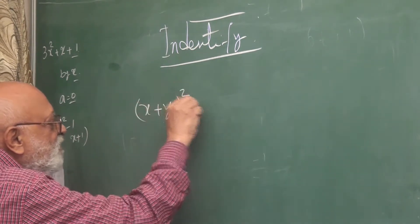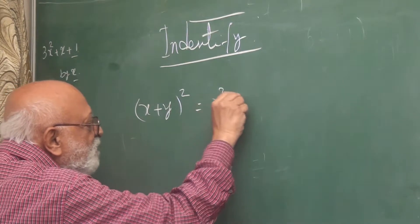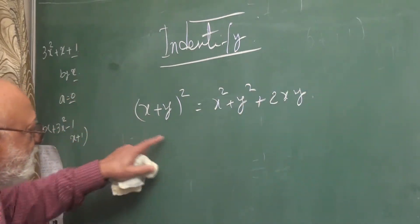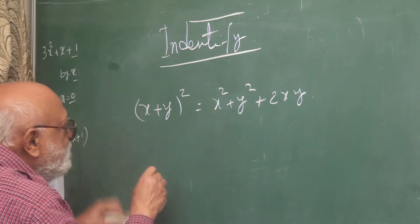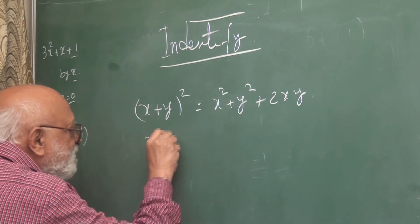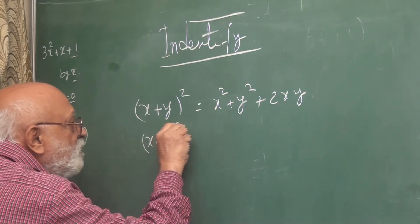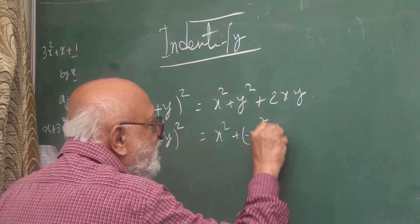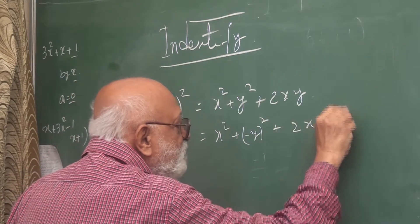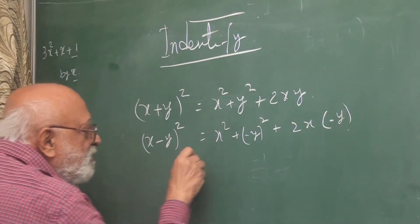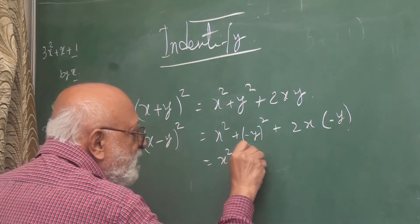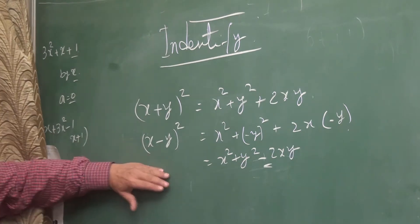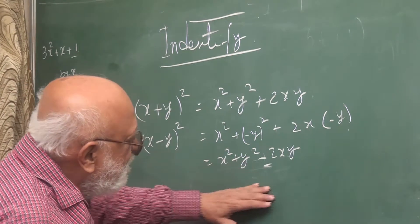x plus y squared equals x squared plus y squared plus 2xy. You don't have to remember the next one separately — you can always deduce it. For example, if I want x minus y squared, I will put minus y wherever positive y appears, so it will be x squared plus y squared minus 2xy. So don't try to remember the negative version separately.